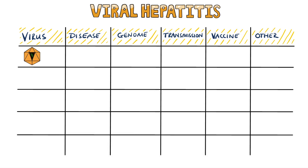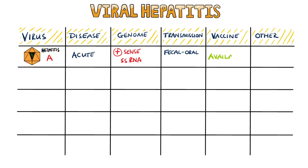Hepatitis A only causes an acute hepatitis — it doesn't lead to a chronic disease. It's a positive-sense, single-stranded RNA virus spread through consumption of food or water contaminated by fecal matter of an infected person.